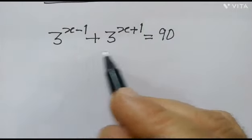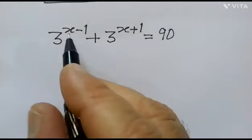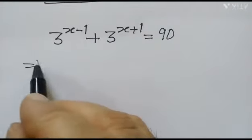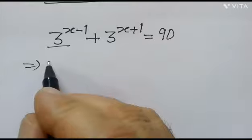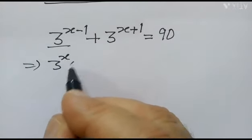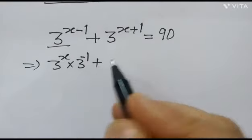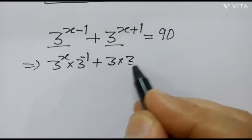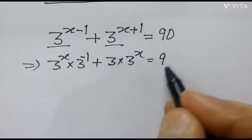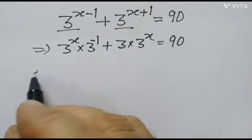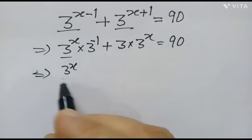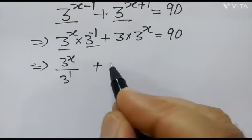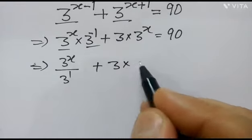Hi friends, we have to solve this exponential equation: 3 to the power (x minus 1) plus 3 to the power (x plus 1) is equal to 90. First, we will break it as 3 to the power x into 3 to the power minus 1, plus 3 to the power 1 into 3 to the power x, is equal to 90.